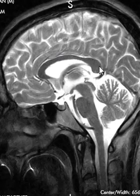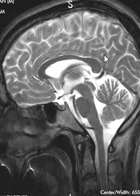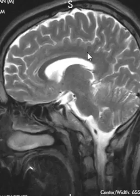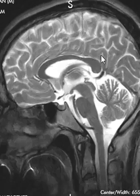We look carefully at the corpus callosum — sometimes there can be developmental abnormalities in it, or sometimes people with multiple sclerosis will have little lesions that go right up to the edge of it. So we look at that, and it looks good in this patient.